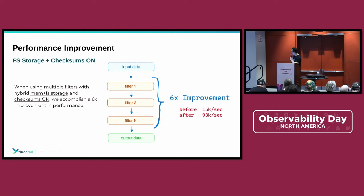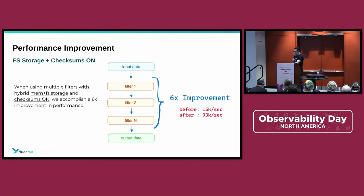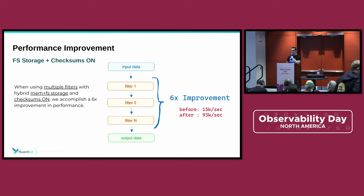The biggest one is a performance improvement. One of the problems when dealing with telemetry data is that if your agent or solution is not fast enough, it can easily consume a lot of resources on your node — and you don't want that tool consuming a lot of CPU and memory. FluentBit is very lightweight. When you collect data, send it, and do filtering in the middle, we came up with a solution for a six-times improvement in performance. People don't use one filter — sometimes they use 10 or 15 because of different business logic, and this is the biggest improvement.